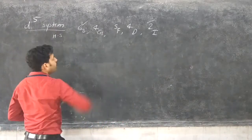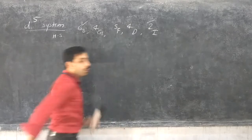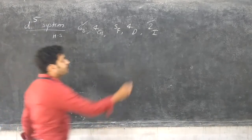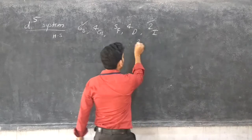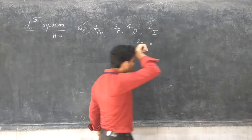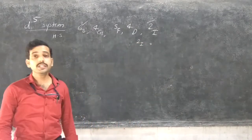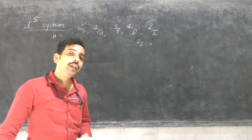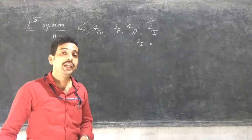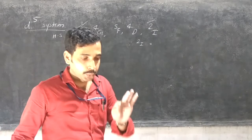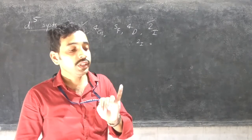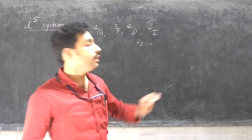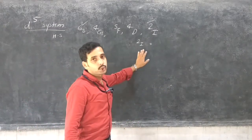Starting from 6S and 2I, we first write 2I. In the 2I notation, its Mulliken terms involve A1G, A2G, EG, T1G, and T2G. These are the terms in the I spectroscopic notation.